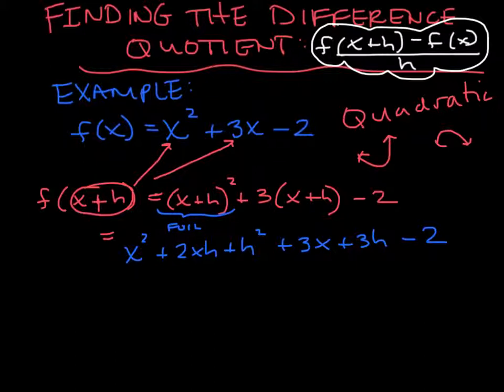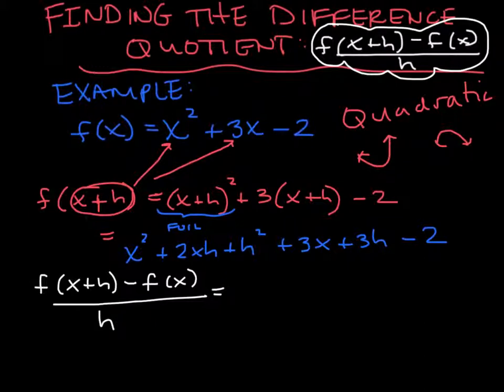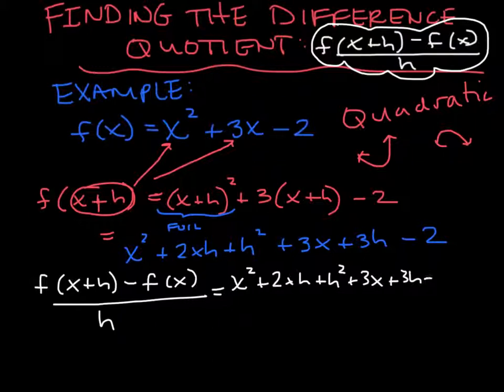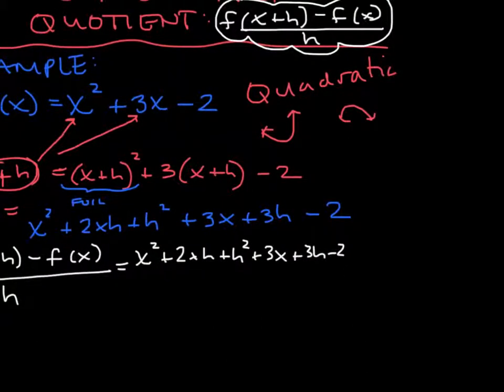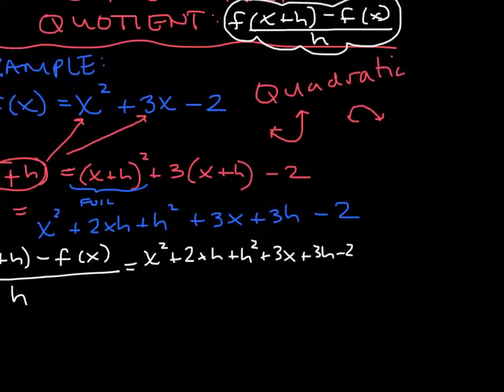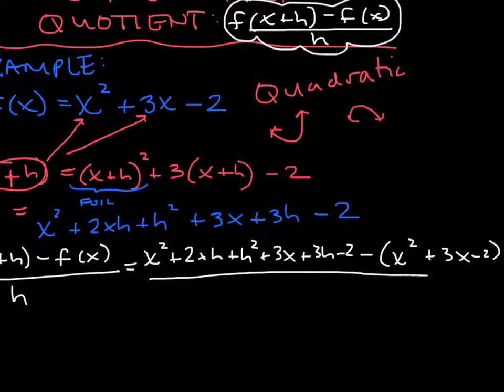So my difference quotient, let's start working on this. My difference quotient is f(x + h), I'll fill in what I just found for that. Then I have to take off the original function all divided by h. What I have in blue is all that first part, so that's f(x + h). Then I have to subtract off the original function which is x² + 3x - 2, all over h.